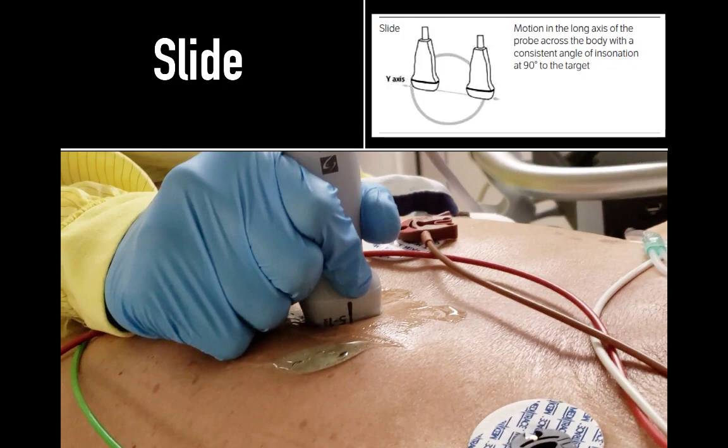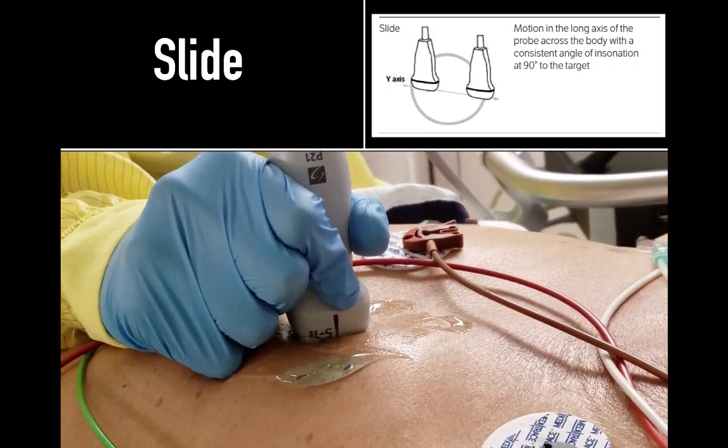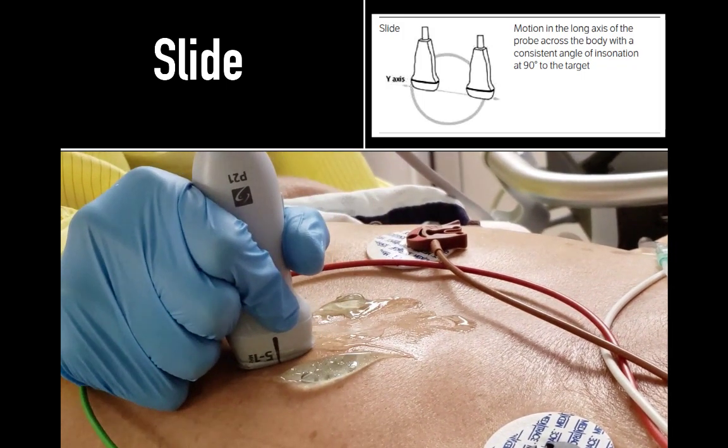Sliding is the first movement to discuss. And this is really moving the probe and beam across the body in line with the long axis of the probe, ninety degrees to target. This means the beam effectively slices through a consistent anatomical plane, much like a saw.